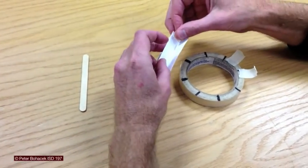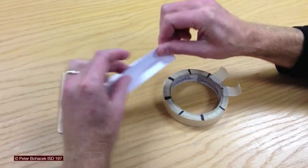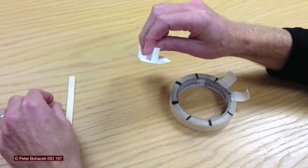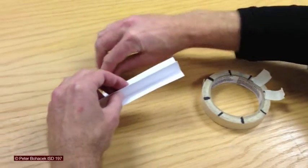Next, take some tape and tape over the end, and take the popsicle stick.